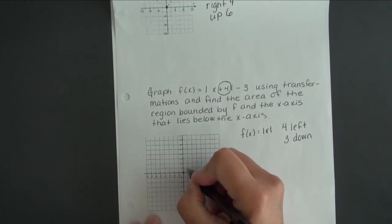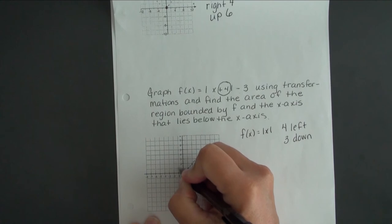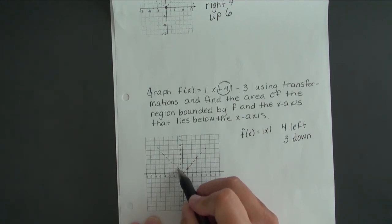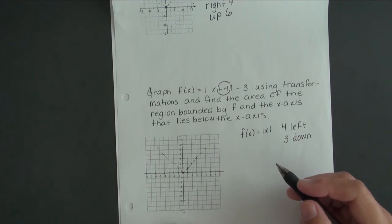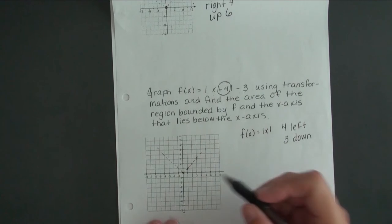I know my absolute value function goes to the points (0, 0), (1, 1), (2, 2), (3, 3), (-1, 1), (-2, 2), (-3, 3), and so on. I want to shift that so that we are going 4 left and 3 down.